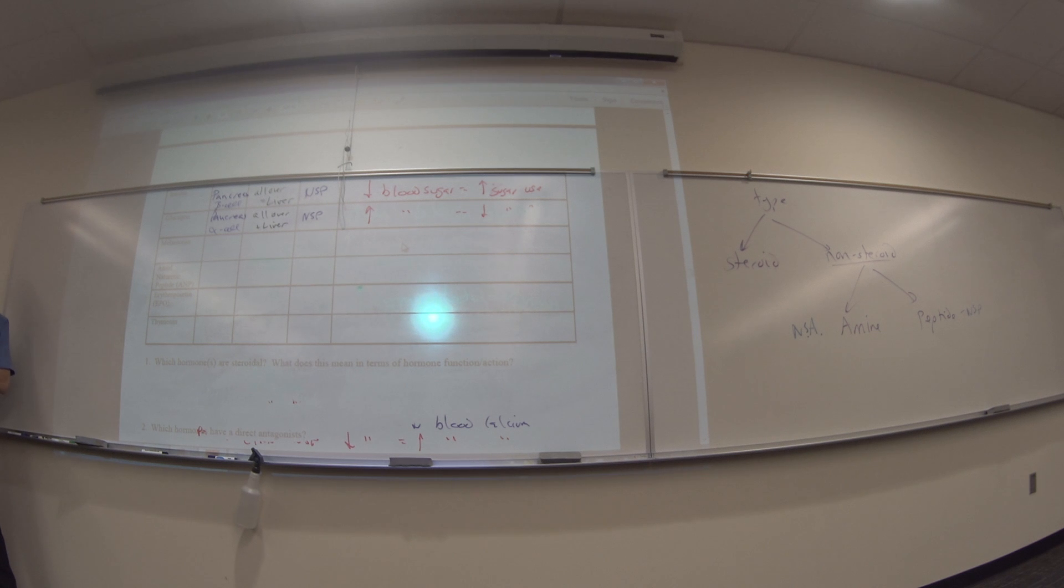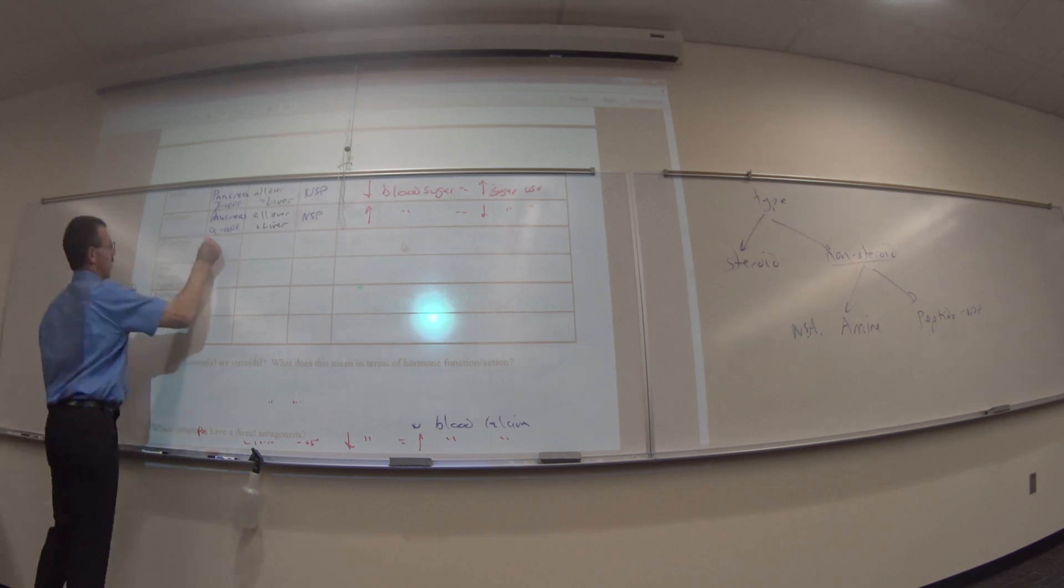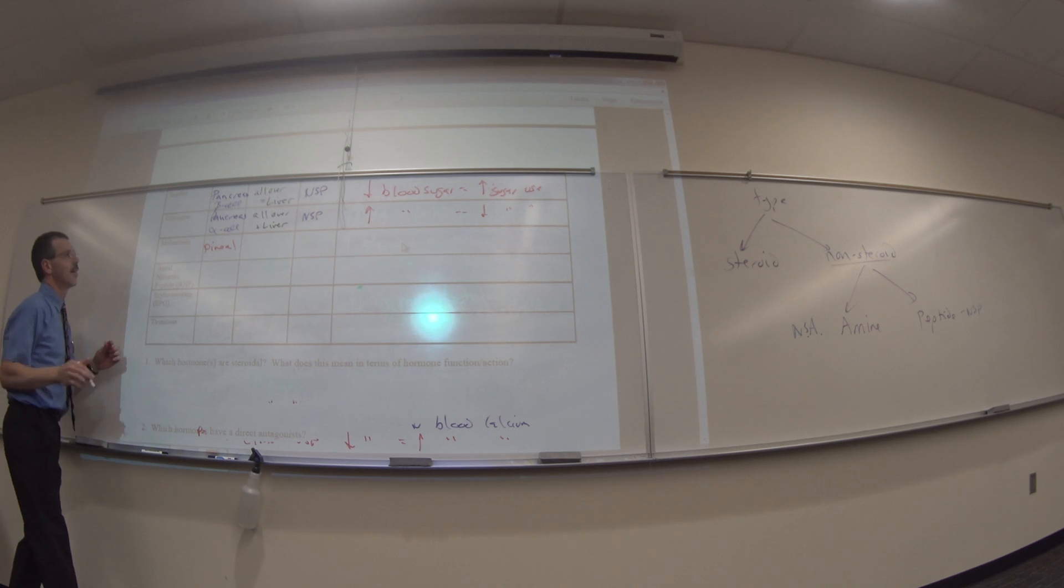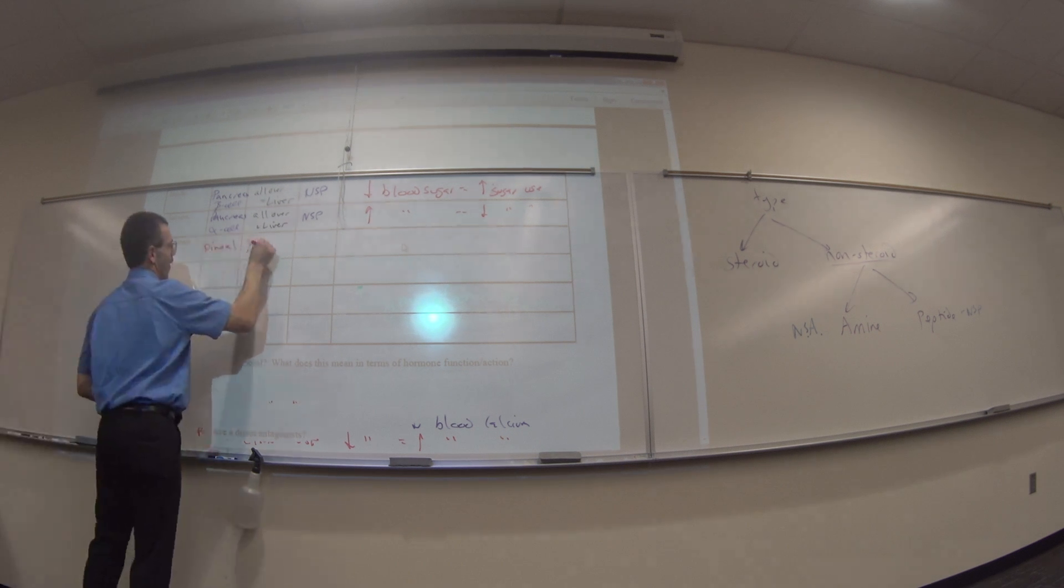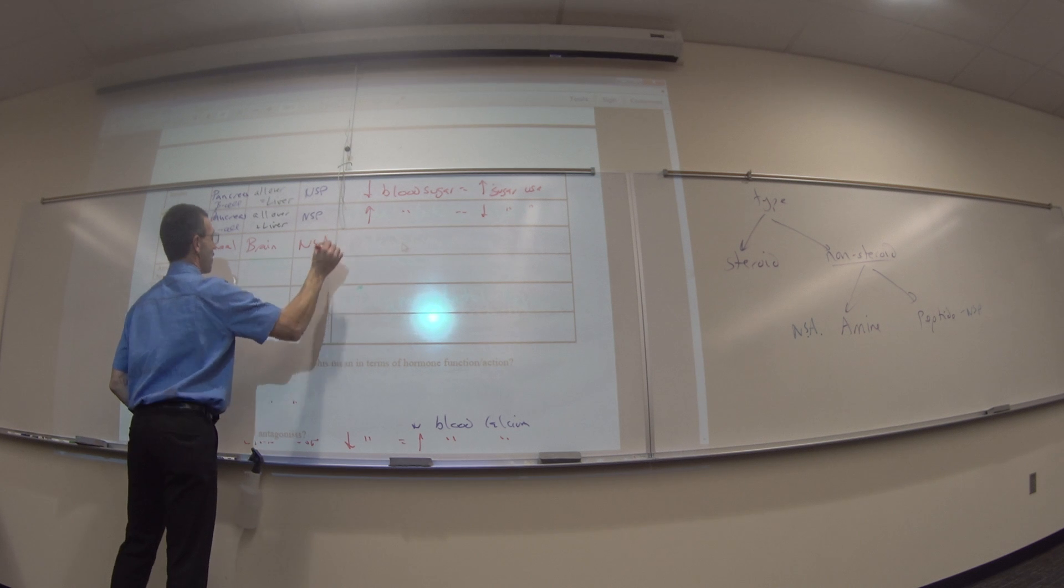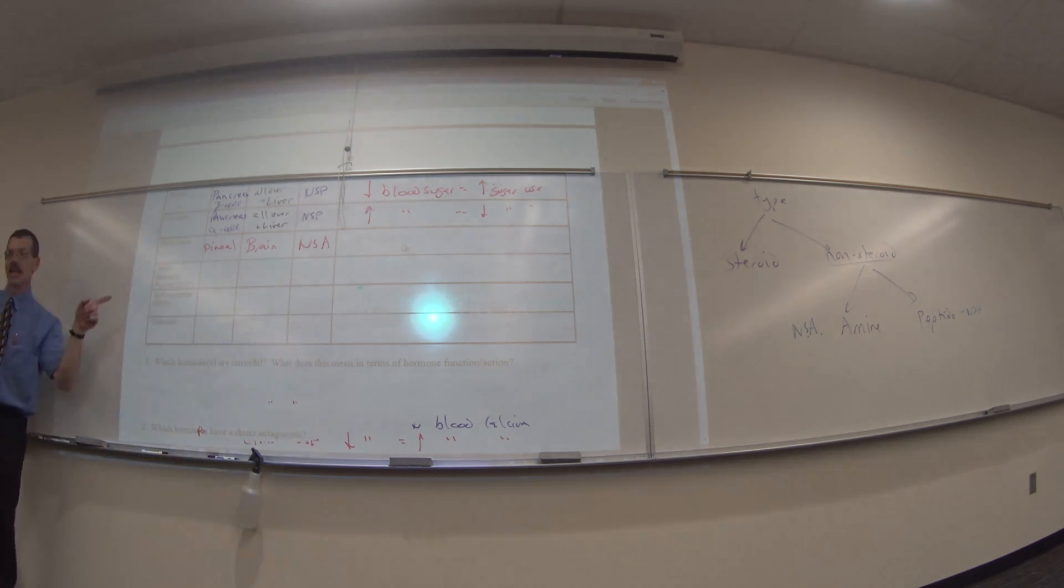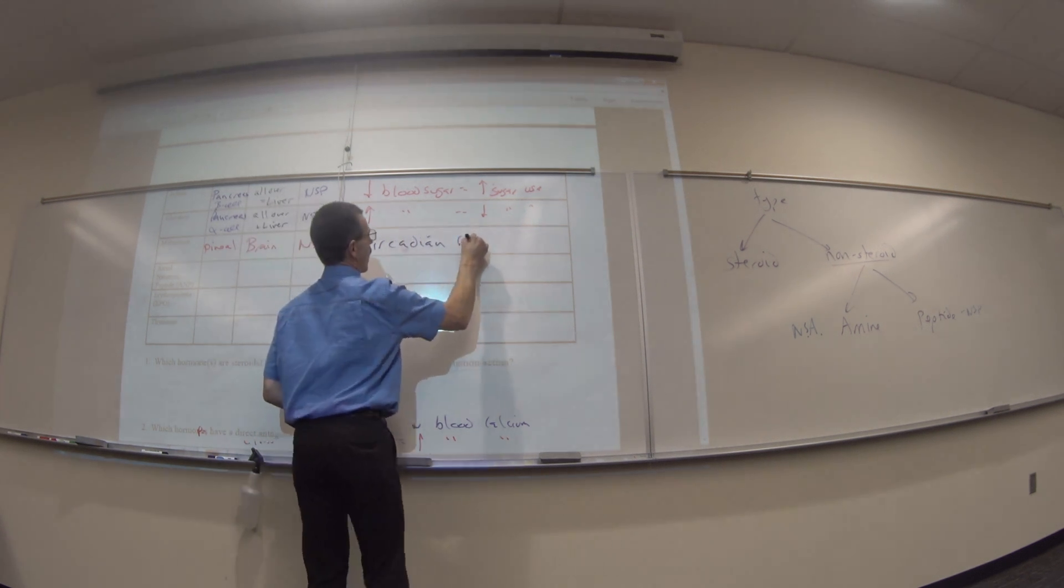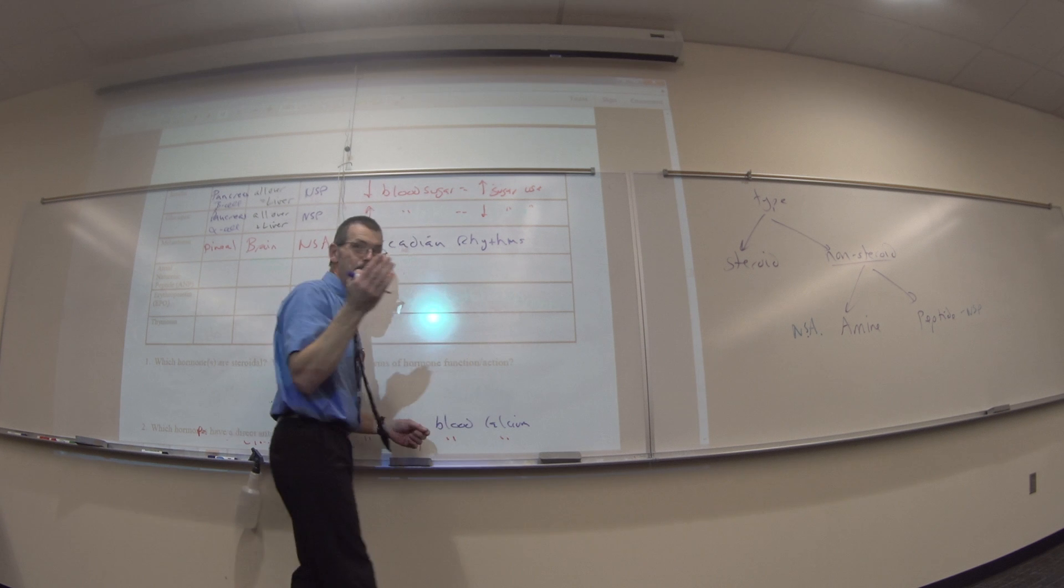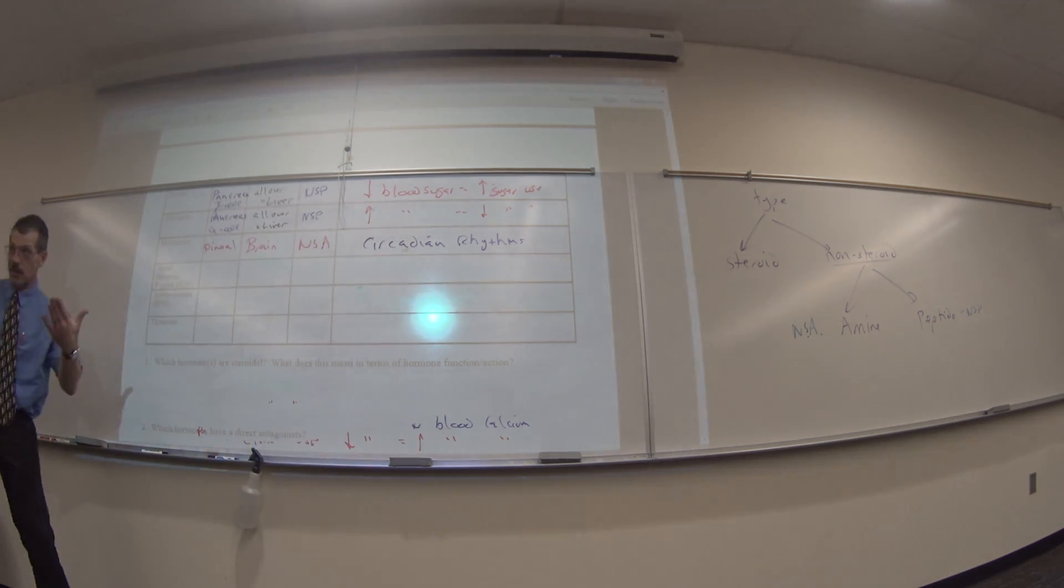Melatonin. Made where? Pineal or the pineal gland. Its target is the brain. It is an NSA, even though they left the E off the end. It's an amine. Melatonin. And what does melatonin make you do? Circadian rhythms. Get sleepy. That's why you're tired in wintertime. The sun's down. You get happy in the summer because the sun's up.